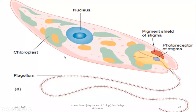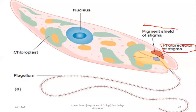Euglena contains chlorophyll and possesses a mass of bright red photoreceptor granules called the stigma. In an enlarged diagram of euglena from a textbook, euglena possesses a chloroplast, nucleus, and other organelles as a eukaryotic cell. At the anterior end where the flagellum is attached, there is the presence of a photoreceptor with a pigment shield covering it.